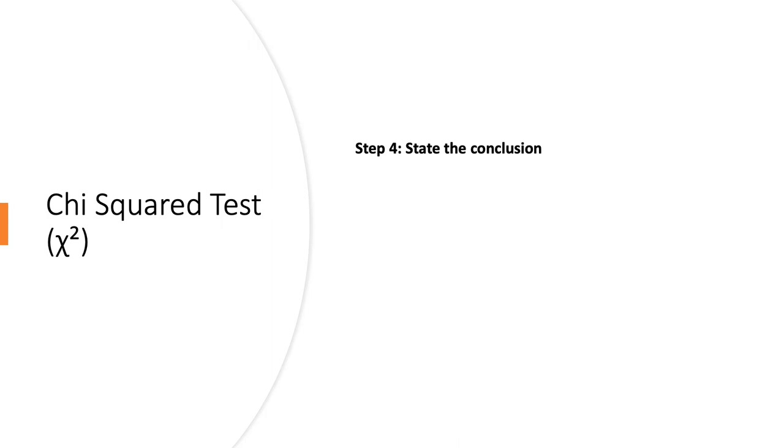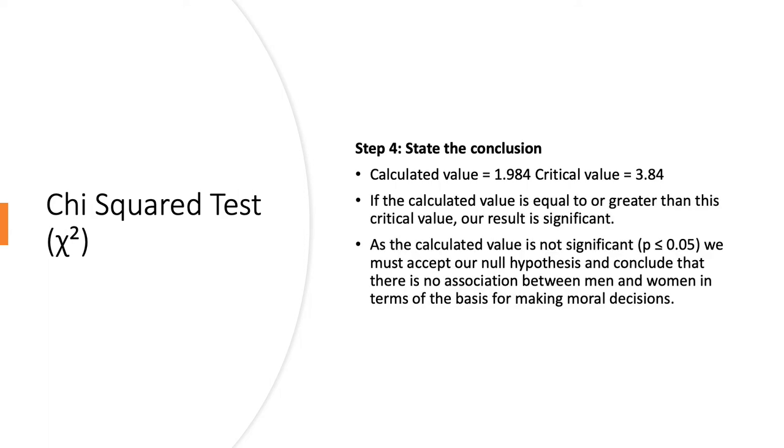Finally, we have to state our conclusion. So, as a reminder, our calculated value, chi-squared, was 1.984. Our critical value was 3.84. Chi-squared has an R in it. So, the calculated value has to be greater than or equal to the critical value. Is 1.984 equal to or greater than 3.84? No, it is not. Therefore, we have actually not found significant results. So, then we would report it as, as the calculated value, 1.984, is not significant at P is less than or equal to 0.05, we must accept our null hypothesis and conclude that there is no association between men and women in terms of the basis for making moral decisions.